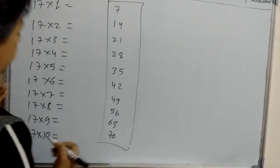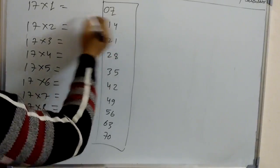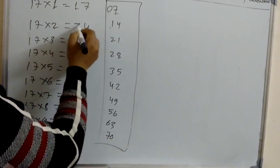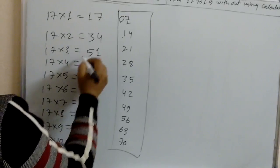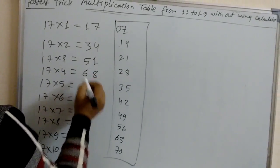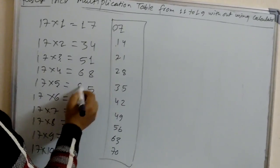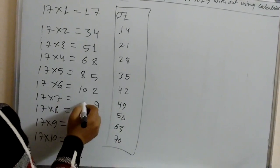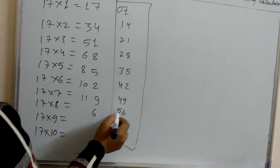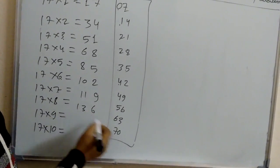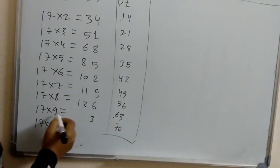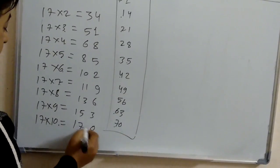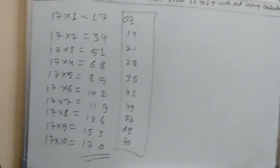Now see here — make the double digit. Last digit same, 0 plus 1 is 1. Last digit 4, 1 plus 2 is 3. Last digit 1, 2 plus 3 is 5. Last digit 8, 2 plus 4 is 6. Last digit 5, 3 plus 5 is 8. Last digit 2, 4 plus 6 is 10. Last digit 9, 4 plus 7 is 11. Last digit 6 as it is, 5 plus 8 is 13. Last digit 3, 6 plus 9 is 15. Last digit 0, 7 plus 10 is 17. In this way we can learn the multiplication table of 17.